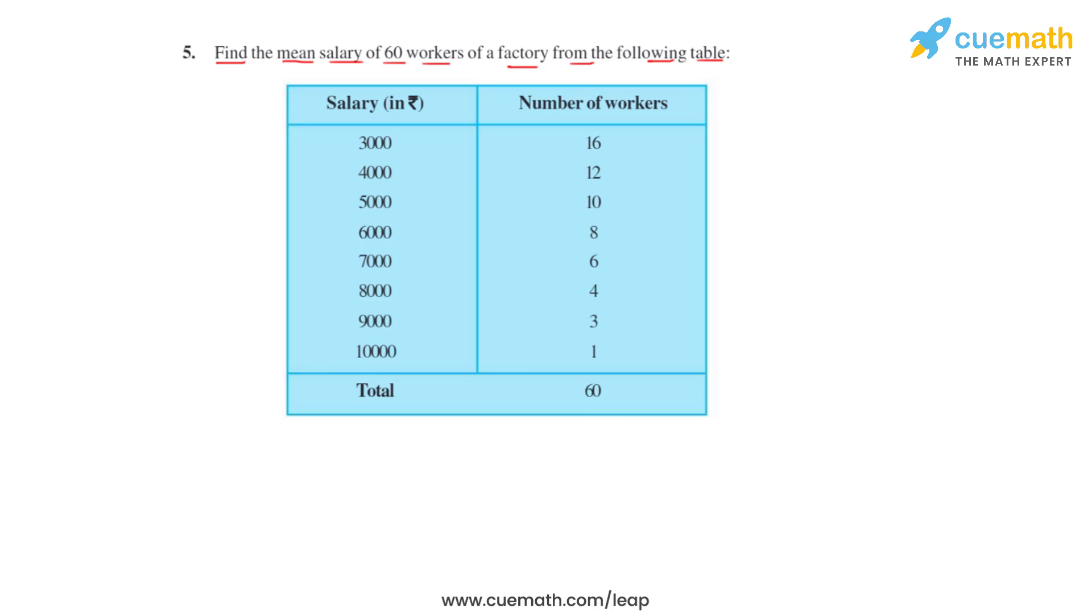Question number five says find the mean salary of 60 workers of a factory from the following table. This is the table that we have in which different salaries have been listed and the number of workers who get that salary is also given. So in order to find the mean salary of these 60 workers we will make use of the formula.